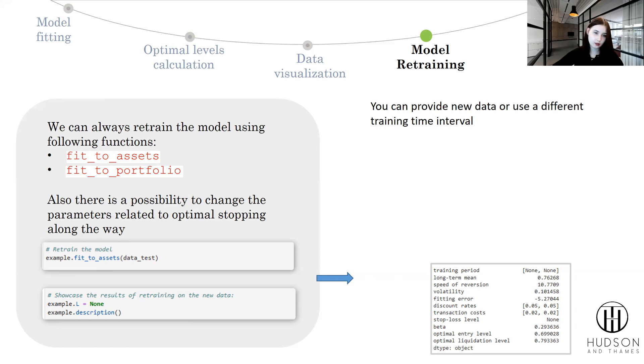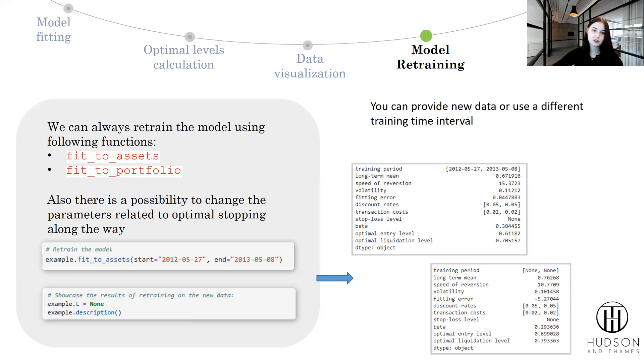As a second way to retrain the data, we can just use a different training time interval from already provided data and achieve a result like so.